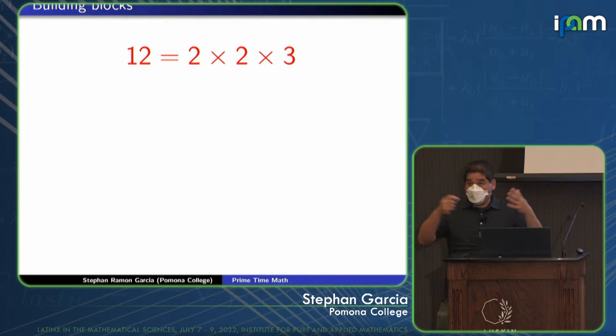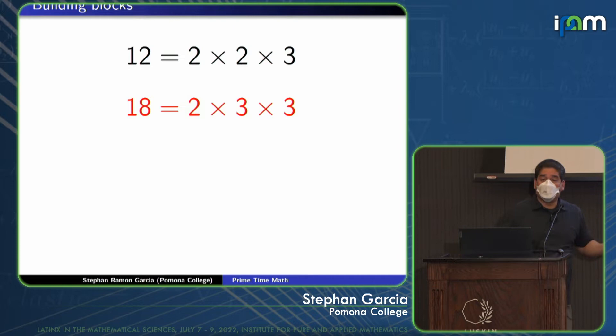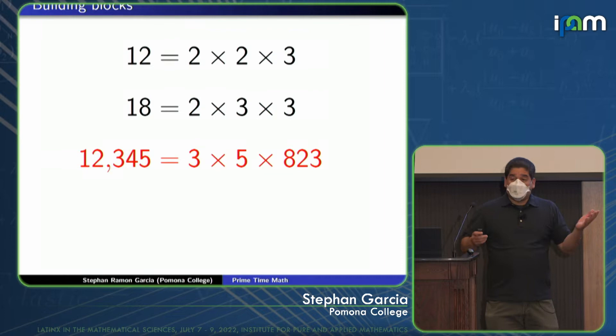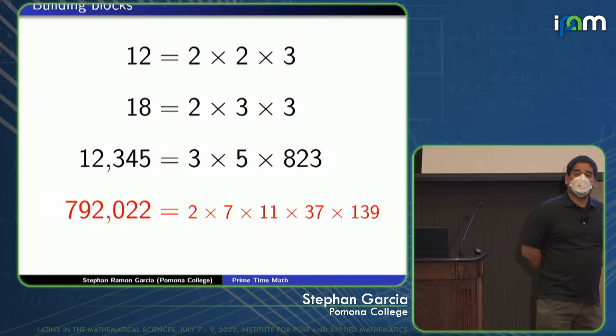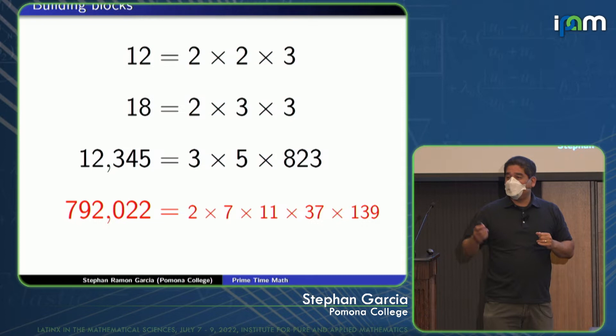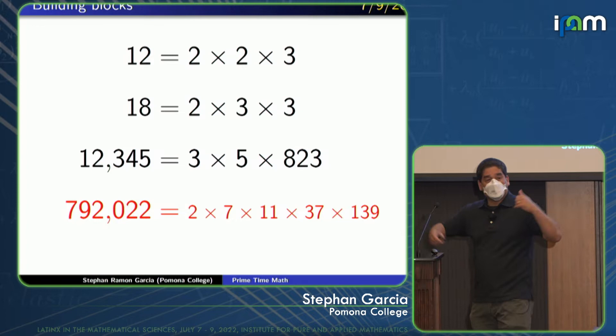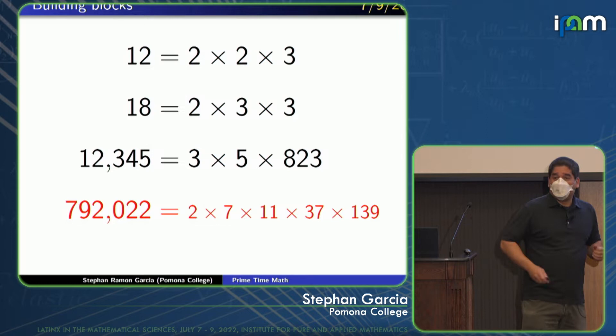The primes are the building blocks of arithmetic. 12 is 2 times 2 times 3. Every whole number factors as a product of primes in an essentially unique way up to order. Even numbers like 12,345, that factors as 3 times 5 times 823, a rather large and unwieldy looking prime. Here's a number that appeared in the news this morning. 792,022 all over the news. That factors as 2 times 7 times 11 times 37 times 139. That's the day's date. Any natural number can be factored as a product of primes. So the primes are the building blocks of the natural numbers. The natural numbers are the building blocks of the integers. From the integers, you get the rational numbers. From the rational numbers, you get the real numbers. It might be a slight exaggeration to say, but I think the prime numbers are fundamental building blocks of mathematics itself.